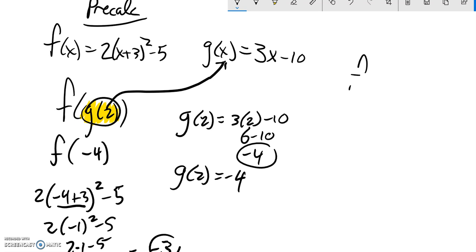So again, the idea with this f of g of 2 is, g is a function that you plug something into and you get an answer out. So what happened is we took the 2, we plugged it into g, and it spit out a negative 4.